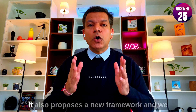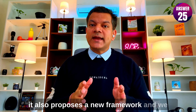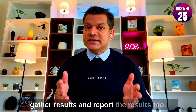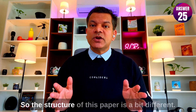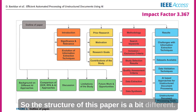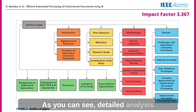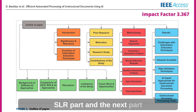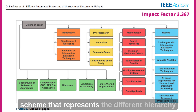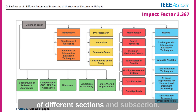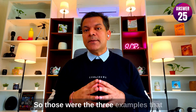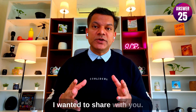The third paper is an SLR paper but it also proposes a new framework and gathers and reports results. So the structure of this paper is a bit different. Detailed analysis of the literature is the SLR part and the next part is the framework part. This paper has used a color scheme that represents the different hierarchy of sections and subsections. So those were the three examples that I wanted to share with you.